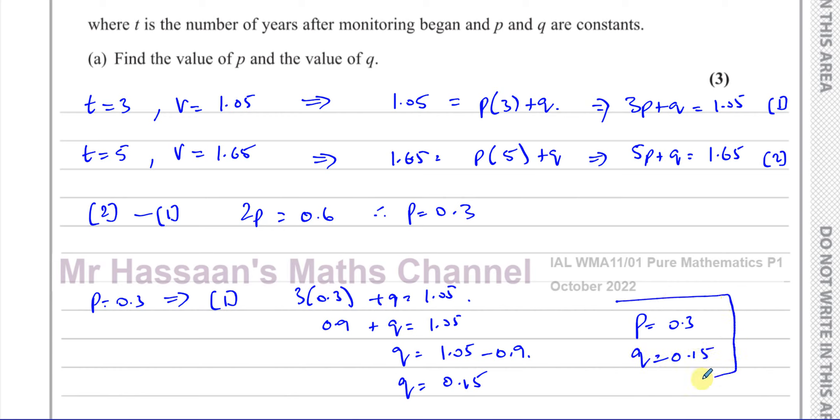So there is the answer to part A of this question. If we wanted to check our answers, we could substitute in here and see if we're correct. It's 0.9 plus 0.15, that's 1.05. And 5 times 0.3, that's 1.5 plus 0.15, that's 1.65. So those two values do satisfy both the equations. So we know we're correct.